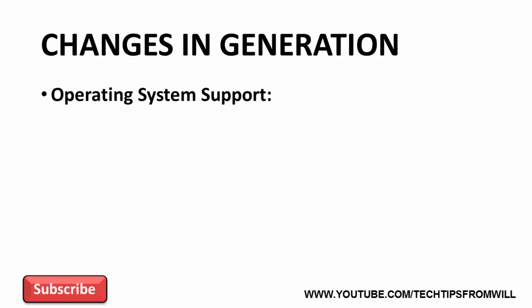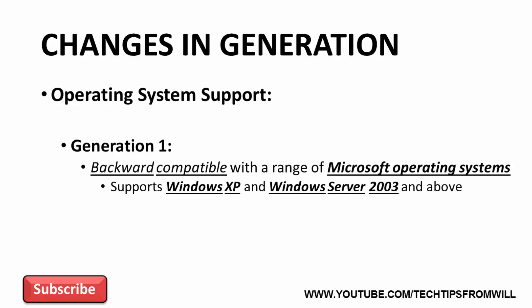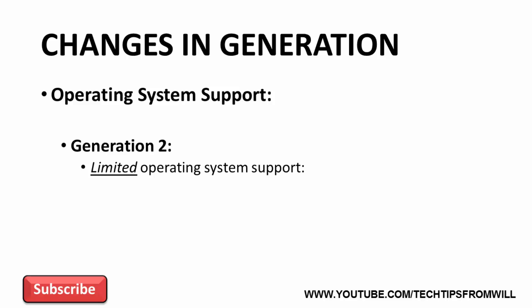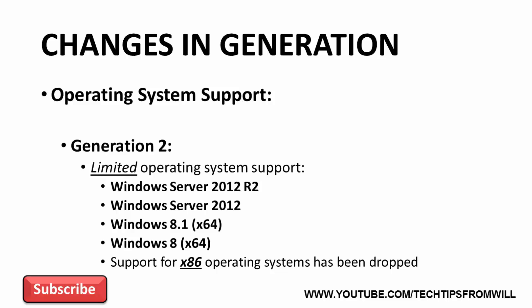The next change relates to operating system support. Generation 1 virtual machines offer backward compatibility with a range of Microsoft operating systems, officially supporting Windows operating systems as far back as Windows XP and Windows Server 2003. Furthermore, Generation 1 virtual machines support the installation of both 32-bit and 64-bit operating systems. Generation 2 virtual machines, on the other hand, only offer limited operating system support. At the time this video was recorded, Generation 2 virtual machines support only the following: Windows Server 2012 R2, Windows Server 2012, and 64-bit versions of Windows 8.1 and Windows 8. You can't install any earlier Microsoft operating systems onto a Generation 2 virtual machine, and support for 32-bit operating systems has been dropped entirely.